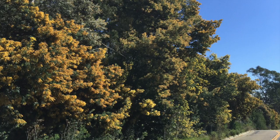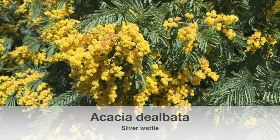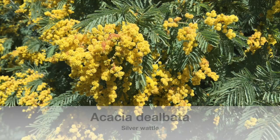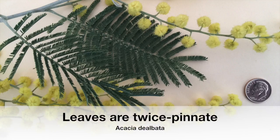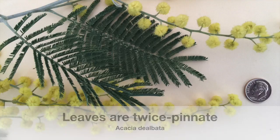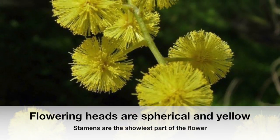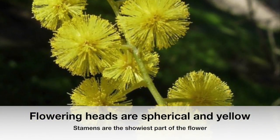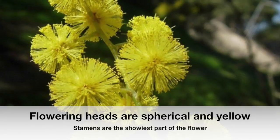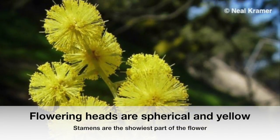In this video, we discuss four prominent species of acacia that are important to know. The silver wattle, Acacia dealbata, has leaves that resemble a feather. They are highly divided, known as twice-pinnately compound. Each leaf is comprised of more than six pairs of primary leaflets, and at the base of each pair of those primary leaflets there is a raised gland. The flowering heads are spherical and yellow. The petals are inconspicuous; the showiest parts of the flowers are the stamens, where pollen is produced.